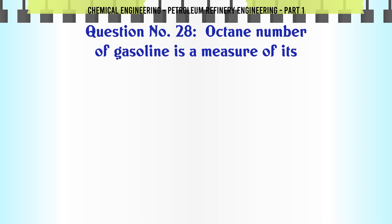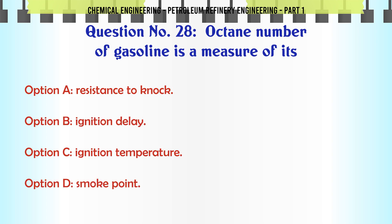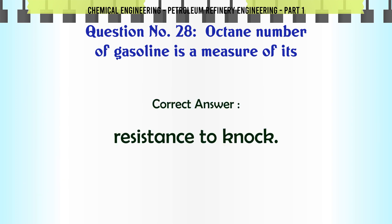Octane number of gasoline is a measure of its: A. Resistance to knock, B. Ignition delay, C. Ignition temperature, D. Smoke point. The correct answer is Resistance to knock.